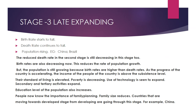Stage 3 is Late Expanding. The characteristic of this stage is that both the birth rate and the death rate are falling — but the population is still rising. The reason is that birth rates are still higher than death rates, so the number of people being born is always higher than the number dying, and because of this there is still population growth.